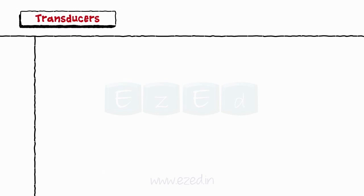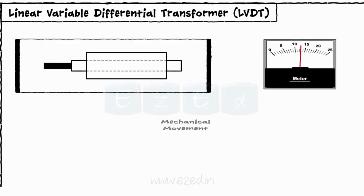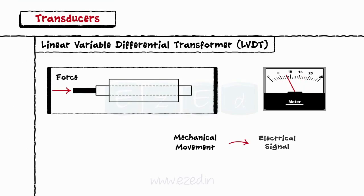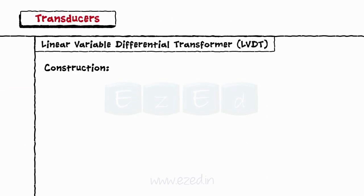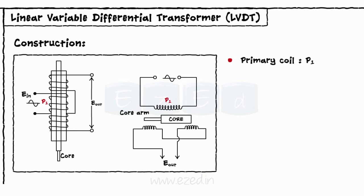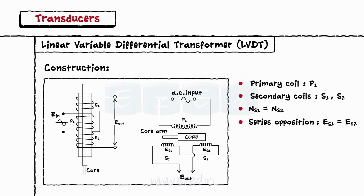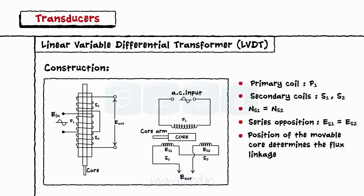The next type of transducer we will study is a linear variable differential transformer, abbreviated as LVDT. The motion of an object to which the LVDT is coupled is converted into a corresponding electrical signal. A linear variable differential transformer consists of three coils: one primary coil P1 and two secondary coils S1 and S2, wound on a hollow cylindrical former. The secondary coils have equal numbers of turns but are connected in series opposition, meaning the EMF voltages induced in them are opposite to each other. The primary coil is connected to AC mains, and a movable soft iron core slides inside the hollow former. The position of the movable core determines the flux linkage between the primary winding and each of the two secondary windings.